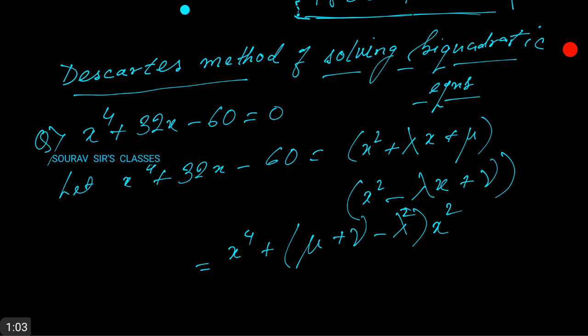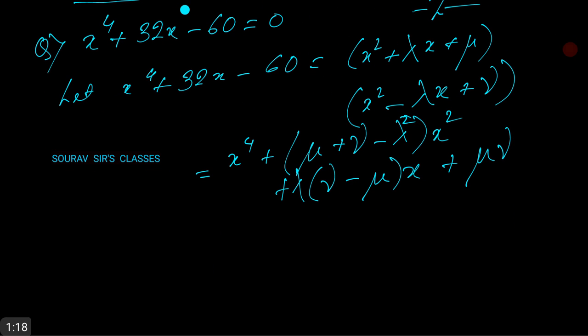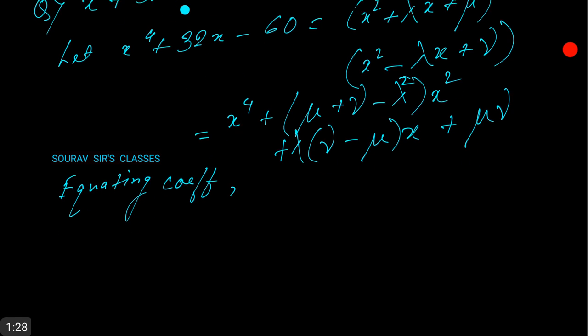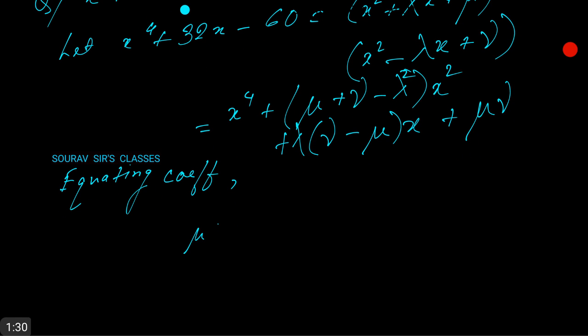Now we just equate the coefficients. Equating coefficients, we arrive at mu plus nu minus lambda squared equals to 0, lambda into nu minus mu is equal to 32, and mu into nu is equal to minus 60.